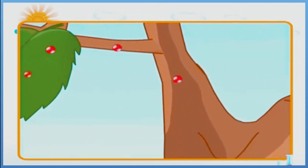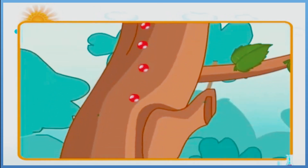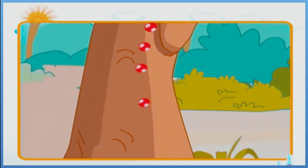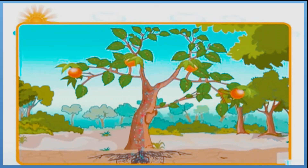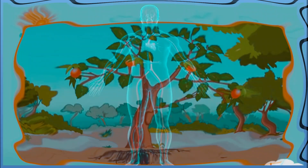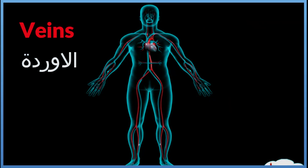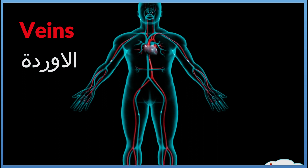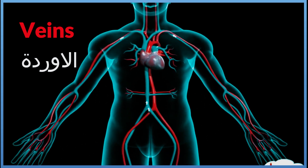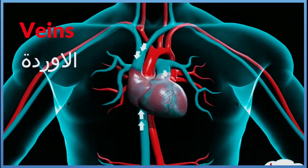Veins carry blood that contains carbon dioxide and is low in nutrients and oxygen from all body parts back to the heart.